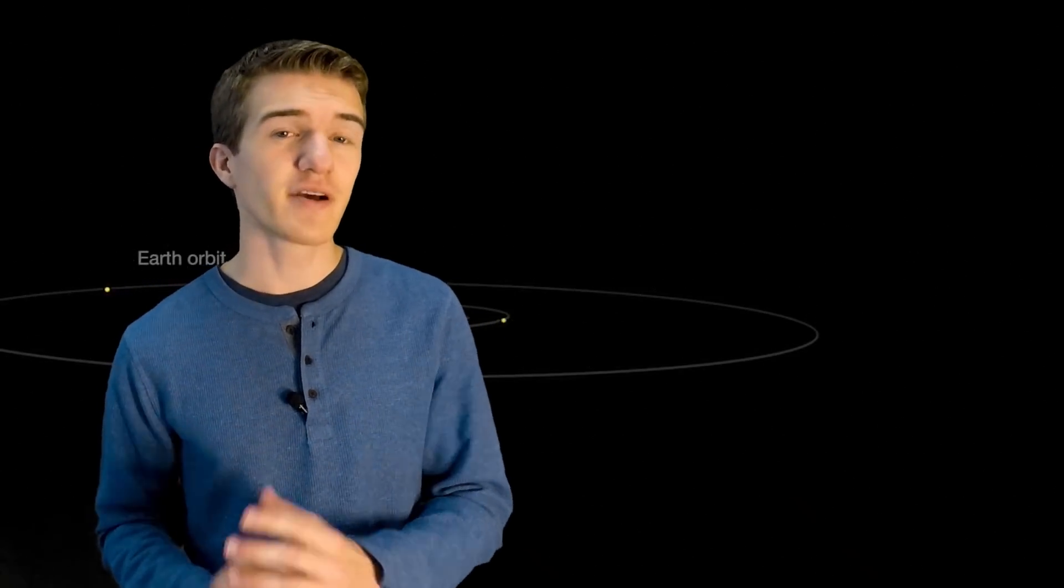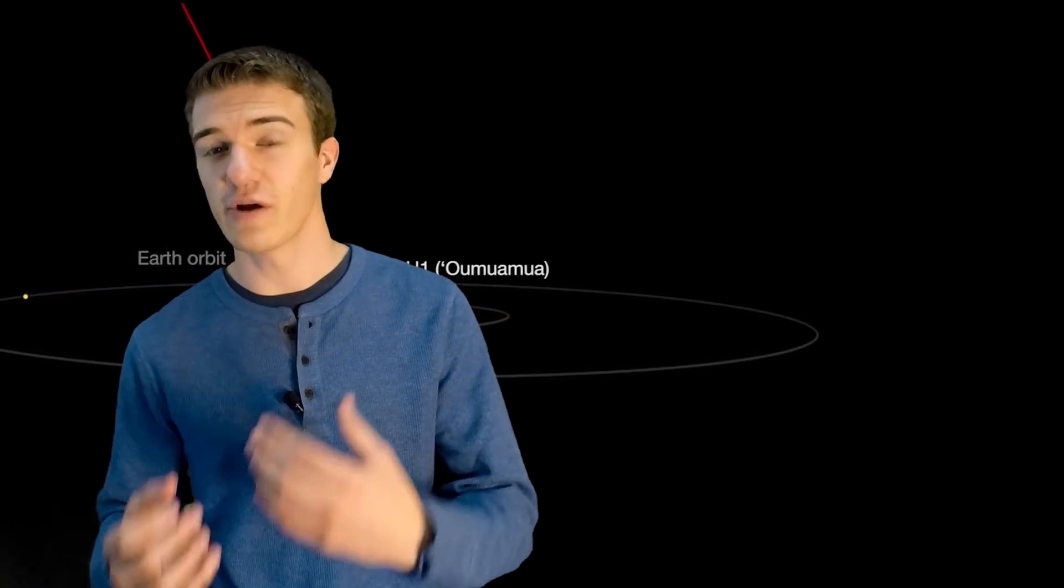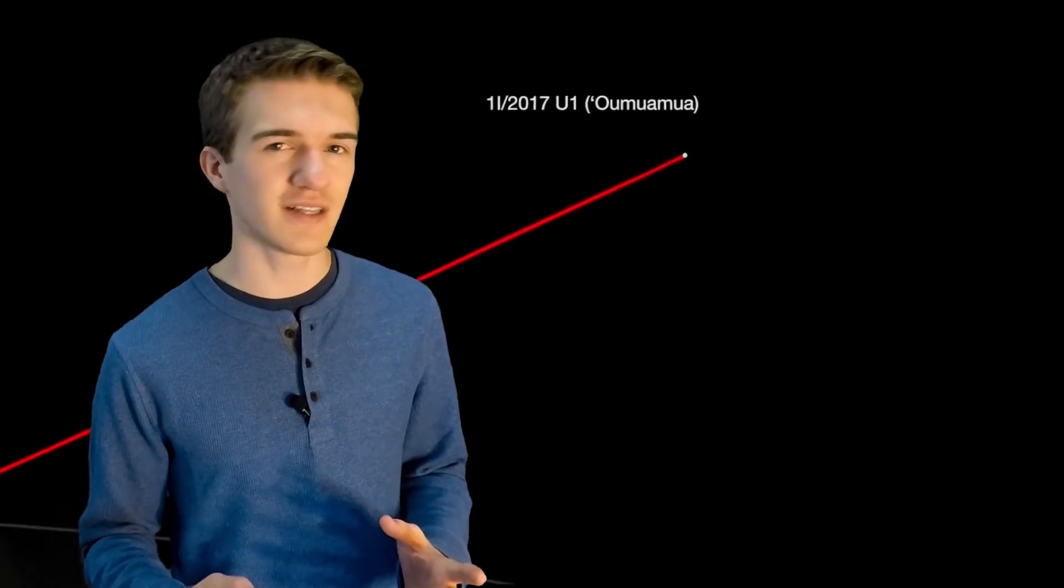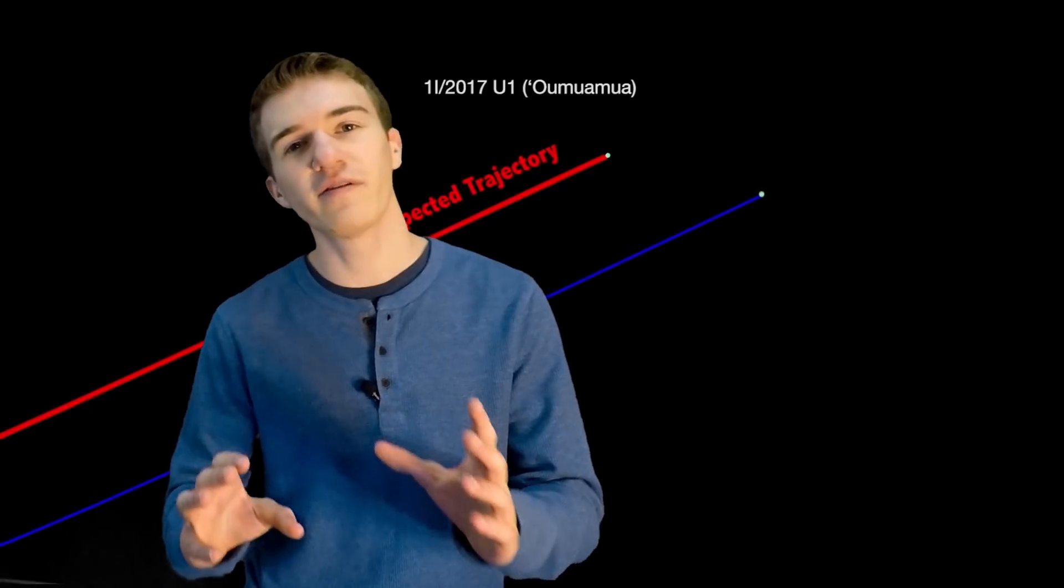Now, you might be thinking, Oumuamua is really interesting. There's a lot of strange things about it that don't necessarily explain how we understand our solar system, but why is this coming up again? Why is it so important? And it's actually pretty fascinating because over the course of the three months, as I mentioned, they were able to measure this object. Near the end, they realized that it wasn't in the position that they predicted it to be. Now, let me give a little bit of a background behind why that's important.